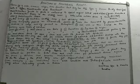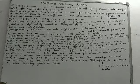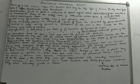Quick revision: we have classified meristems on the basis of function. The first was protoderm, which develops into epidermis. The second is procambium, which develops into vascular tissues. And the third is ground meristem, which forms hypodermis, cortex, endodermis, pericycle, and pith.